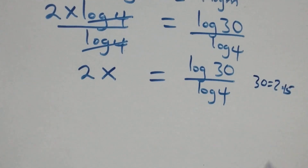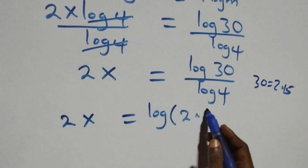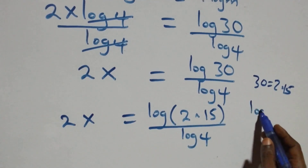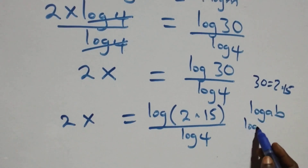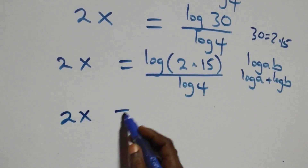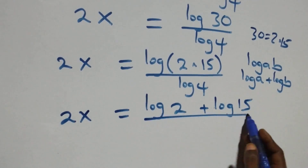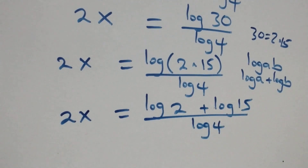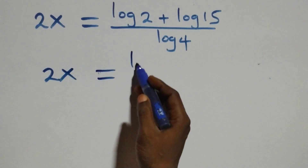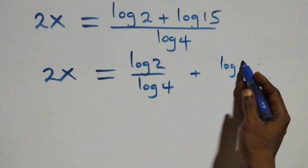We rewrite log thirty as log of two times fifteen, so two x equals log(2×15) over log four. Applying the log product rule — log a plus log b — we get two x equals log two plus log fifteen, all over log four. Splitting the fraction: two x equals log two over log four plus log fifteen over log four.